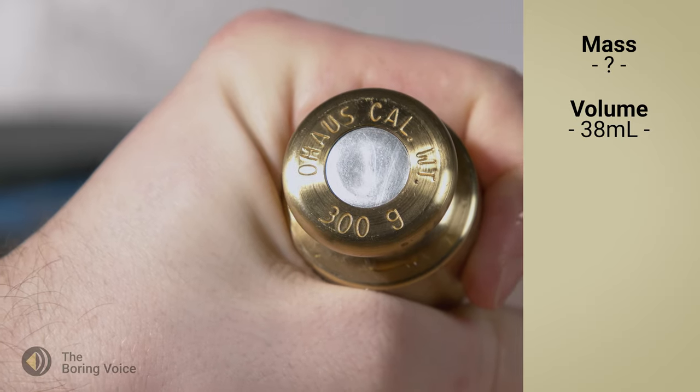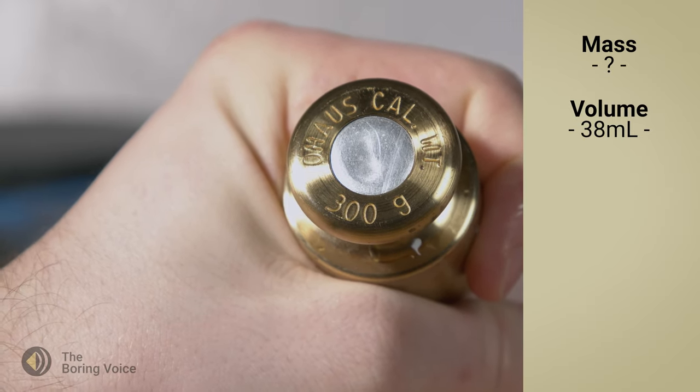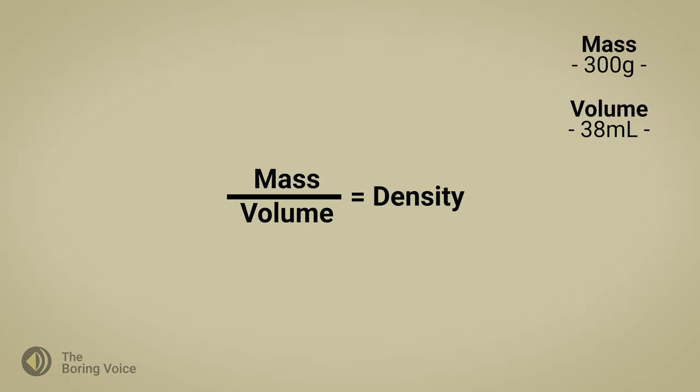Since this is a calibration weight, the mass is stamped on top, which is 300 grams. Now that I have mass and volume, I can plug these numbers into my equation to get density.